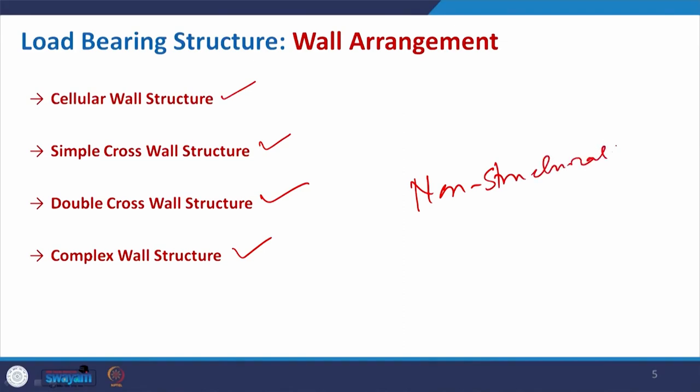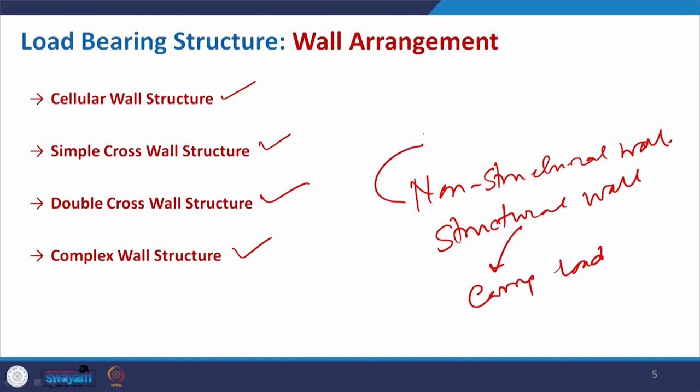Even in a load bearing structure, some partition walls may be added for space distribution. The load is carried only by the load bearing walls, which have greater thickness and transmit load to the foundation. Other partition walls do not need any foundation as they are not taking any load from the slab — these are referred to as non-structural walls. So we have two considerations: one is the structural wall, which carries the load, and the other is the partition wall, which is not carrying the load.